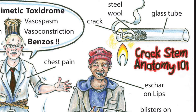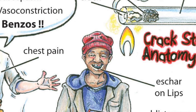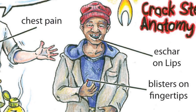With the crack pipe, they put the crack cocaine at one end, then the steel wool or Chore Boy copper scrubbing pad to prevent the crack from being inhaled through the crack stem. The other end is where they put it in their mouth. When smoking crack, people can get burns such as eschar burns on their lips and occasionally blisters on their fingers from holding the crack pipe, since glass conducts heat quite well.